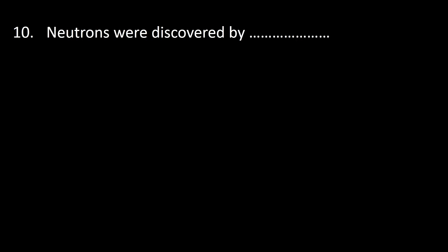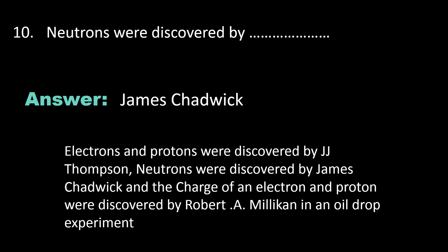Number ten: neutrons were discovered by James Chadwick. Let me quickly give you some explanation. Electrons and protons were discovered by J.J. Thomson. Neutrons were discovered by James Chadwick. And the charge of an electron and proton were discovered by Robert A. Millikan in an oil drop experiment.